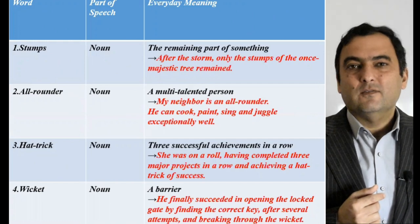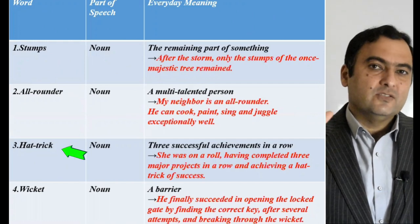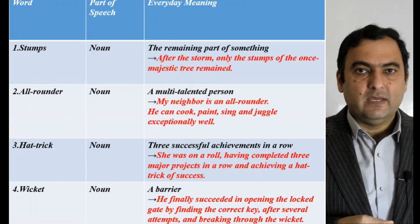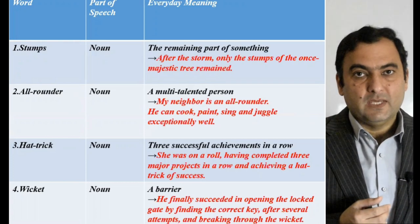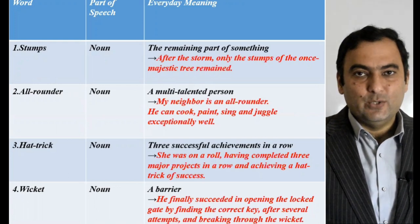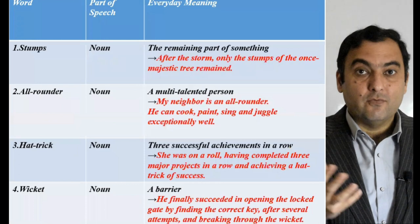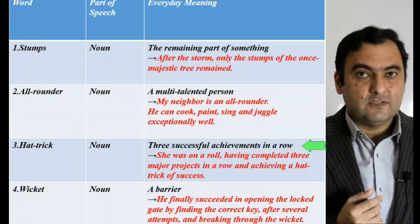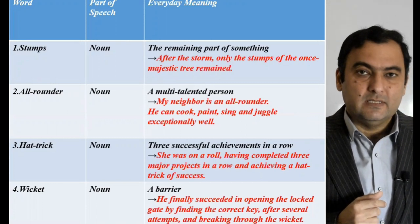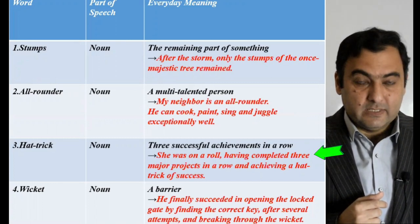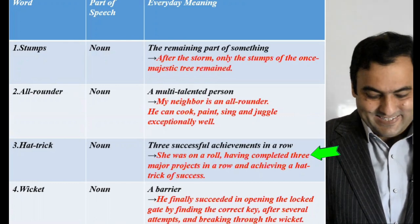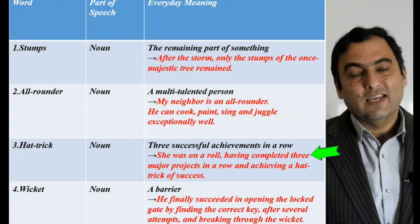Moving on to hat-trick. In cricket, a hat-trick is when a bowler takes three wickets on three consecutive balls — a great achievement. A hat-trick may happen in real life as well, when you achieve three great things in a row. An example sentence: she was on a roll, having completed three major projects, thus achieving a hat-trick of success.